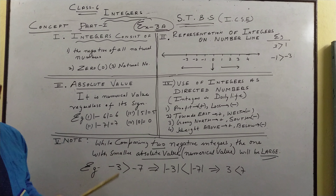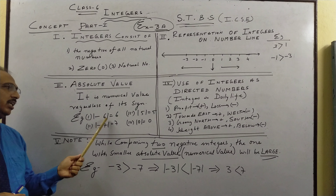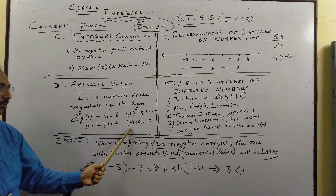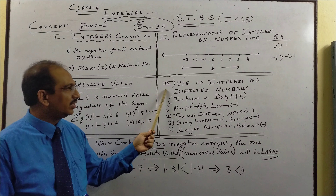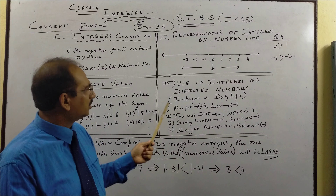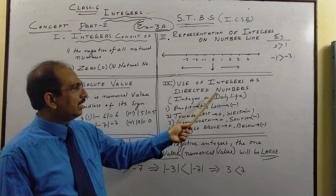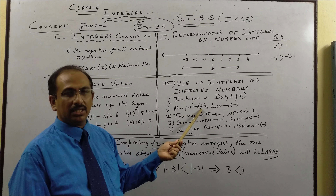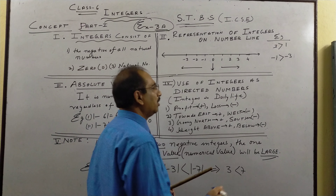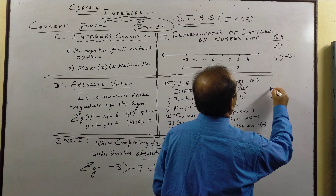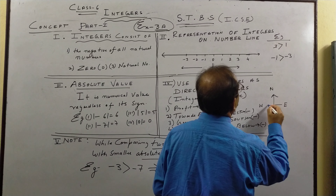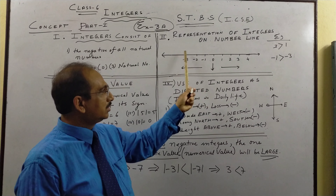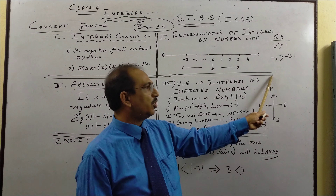The third concept is absolute value. Sometimes we are not interested in the sign of a number — we are interested in the numerical value regardless of its sign. Absolute value is also called modulus, or mod for short. Mod of minus 6 is 6, so a negative becomes positive. Positive remains positive, and mod of 0 is 0. Mod of a negative is also positive.